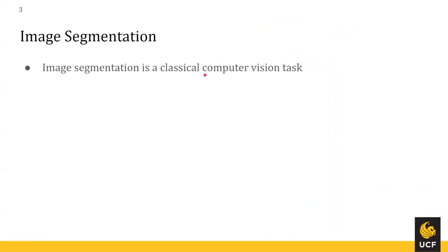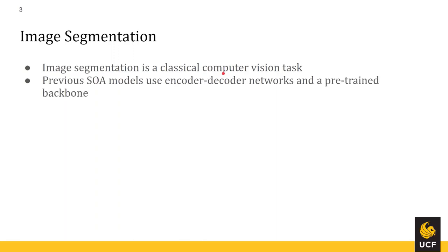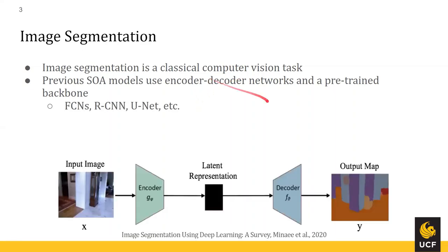The image segmentation task, as we all know, is a classical computer vision task. However, thus far, the state-of-the-art models use encoder-decoder networks and a pre-trained backbone. These models are FCNs, RCNNs, UNet, etc. The image segmentation task we're speaking about is the most simple segmentation available — for example, in this image we're separating the surfaces where we have the door separate from the floor, separate from the clock.